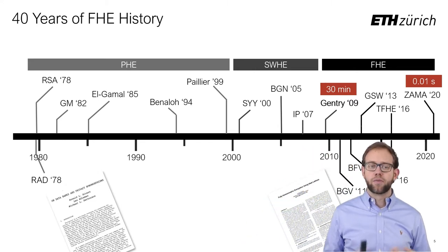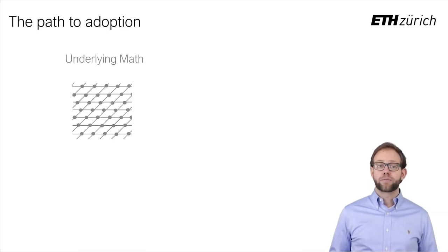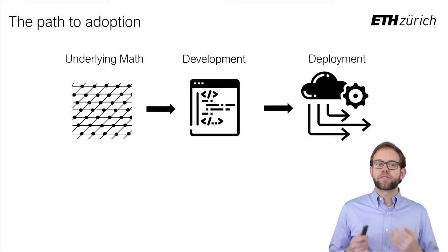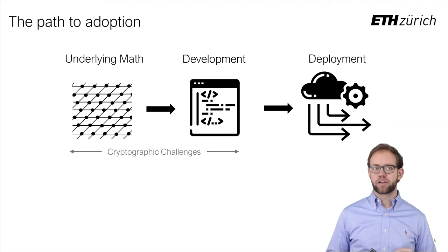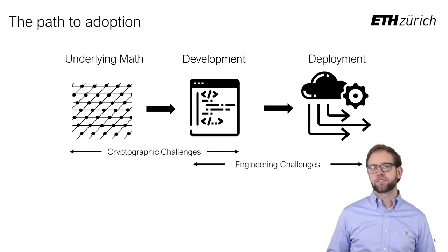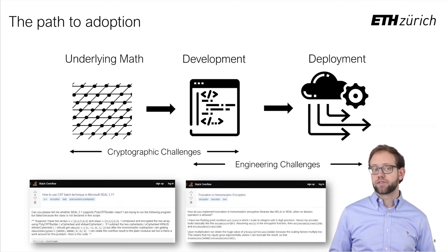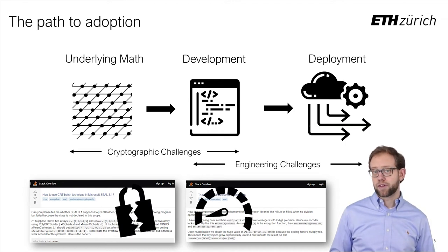Given this, what are the remaining obstacles on the path to adoption? Going from the complex underlying math behind modern FHE schemes to a practical deployment still requires a significant amount of expertise and poses a wide variety of challenges. While some are common issues of working with crypto, many are unique challenges inherent to FHE. As a result, we see non-experts frequently struggle to develop FHE solutions that are both secure and efficient, with naive approaches often lagging many orders of magnitude behind expert-written state-of-the-art solutions.